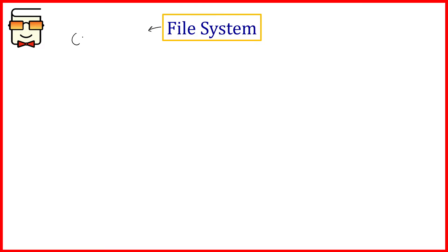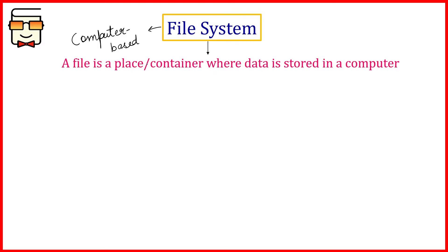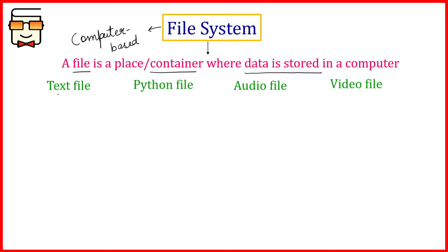The limitations of manual record keeping led to the development of a file system. Here when I say file, I mean a computer-based file, not a manual physical file. With respect to computer-based files, a file is any kind of container where data is stored in a computer — it can be a text file, a C++ file, Java, Python file, audio files, video files, or any other form of storage. The collection of all those files is referred to as a file system.